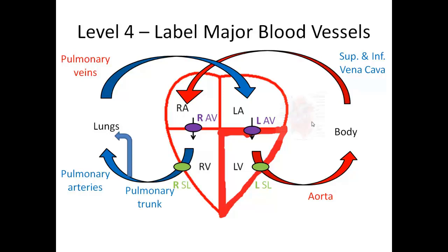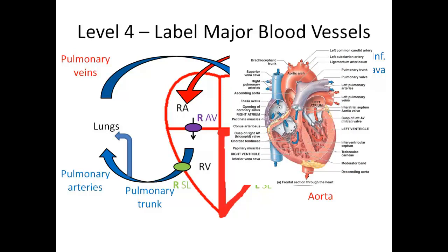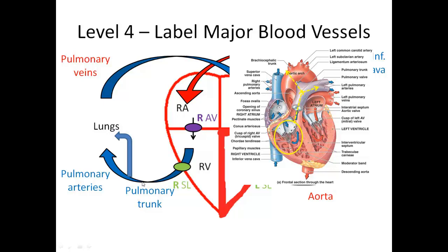Another structure to add is the pulmonary trunk. If you look at the real diagram of the heart, you'll see blood going up through the pulmonary trunk from the right ventricle, then branching out. Think of a tree: one big trunk with branches coming off it. The arteries become two on each side, so here's the big pulmonary trunk and the branches off it — those are your pulmonary arteries.